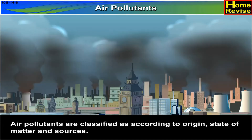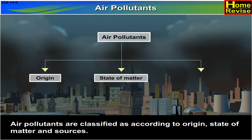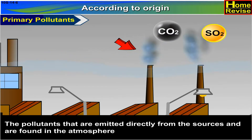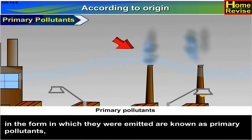Air Pollutants are classified according to origin, state of matter, and sources. The pollutants that are emitted directly from the sources and are found in the atmosphere in the form in which they were emitted are known as primary pollutants.